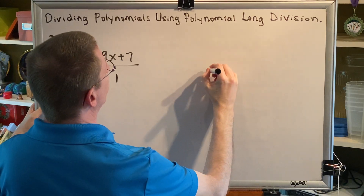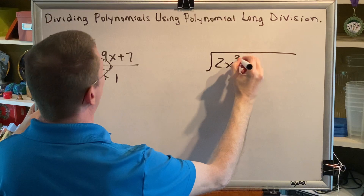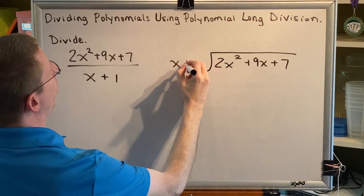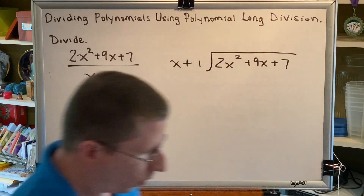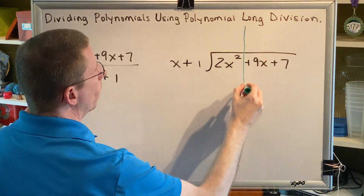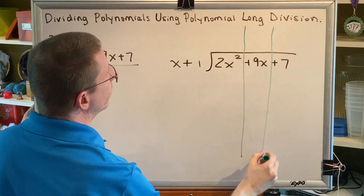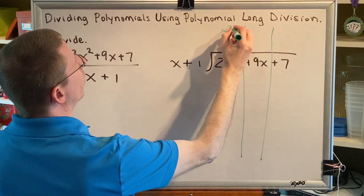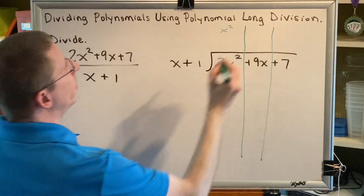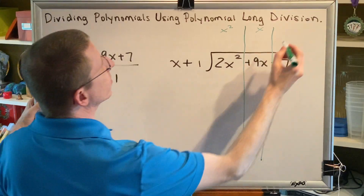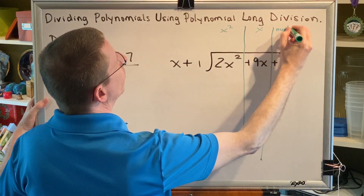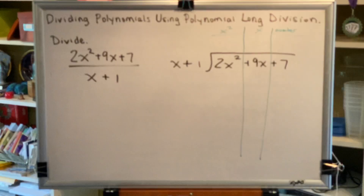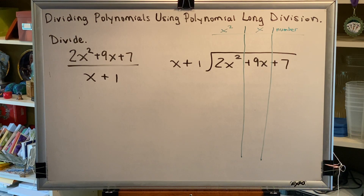The first step is to set this up using polynomial long division form. Our numerator is going to go underneath our division bar, and our denominator is going to go outside the division bar. We're going to create columns for all of our like terms. Just to the left of the add and subtract signs in the numerator, we put vertical bars. The first column is for any term where the variable part is x squared, the second column is for any term where the variable part is x, and the third column is for any term that consists exclusively of a number. This will keep our work neat and organized and help us avoid making mistakes.